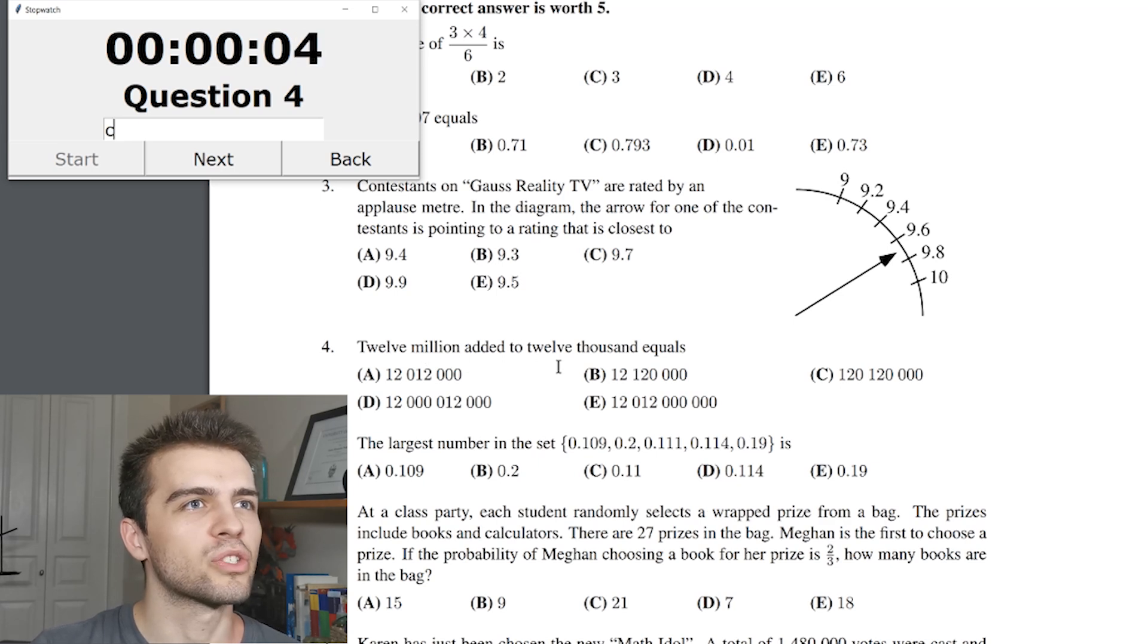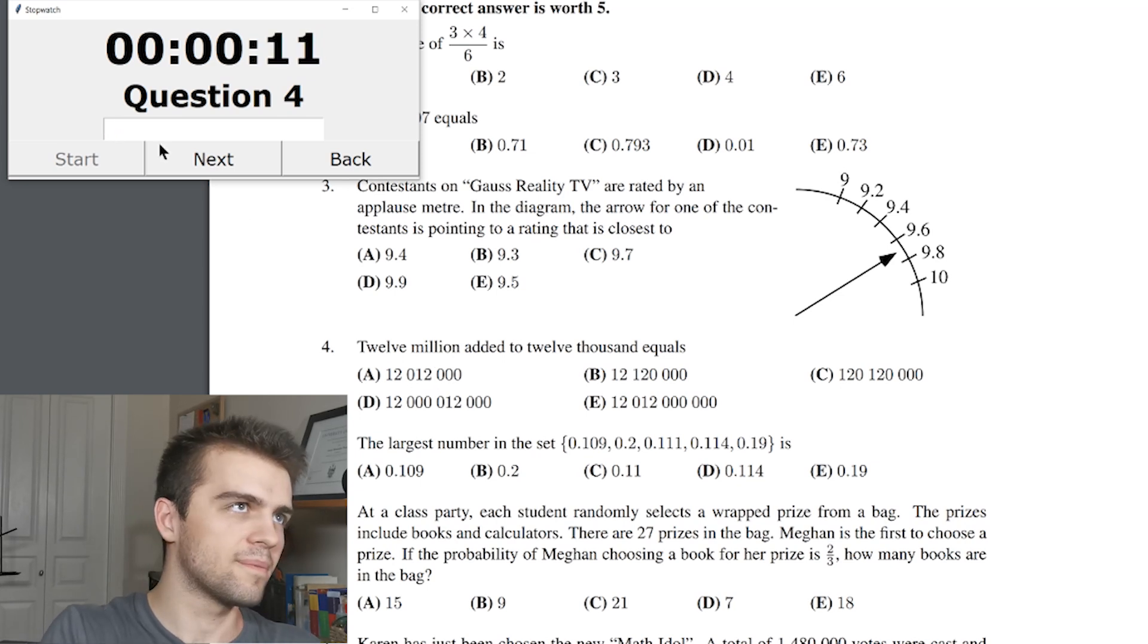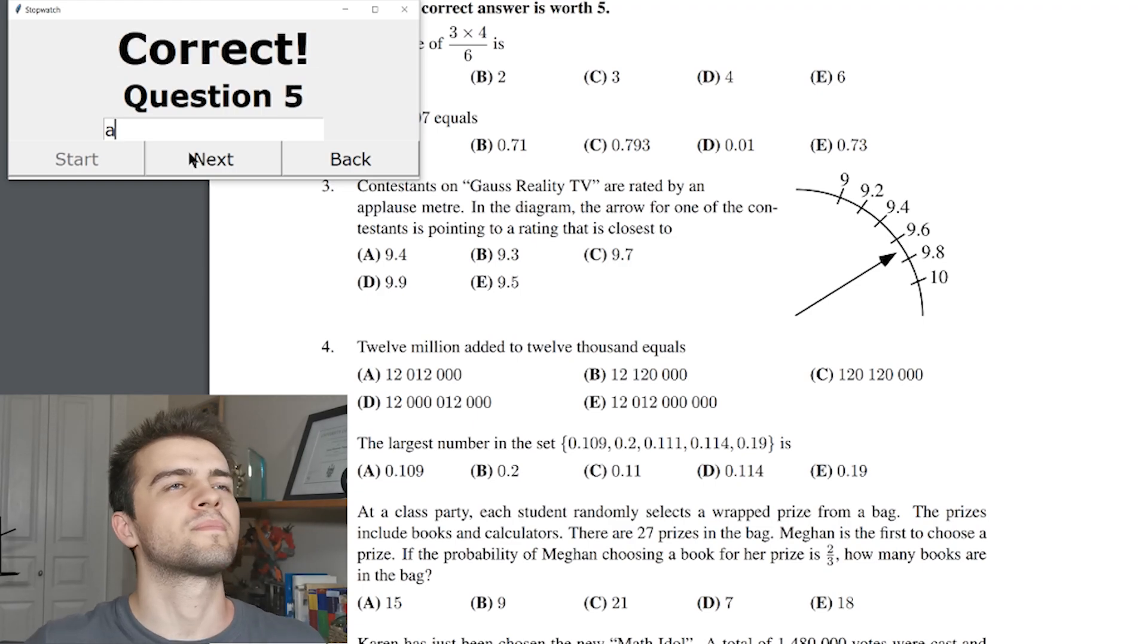12 million added to 12,000 equals, well, this is 12 million and this is 12,000, so I believe the answer is A. Okay, I'm doing good so far.